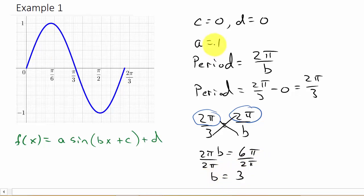So we've got a is one, b is three, c is zero, and d is zero. So we get f of x is equal to one times sine of three x plus zero plus zero. That tells us that f of x is equal to sine of three x. And there is your function for the graph.